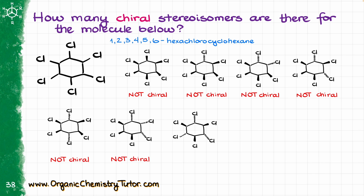In my next molecule I'm going to have my chlorines alternate where they are looking at me or looking in the opposite direction. And now we have again a whole bunch of planes of symmetry over here, so that molecule is definitely not chiral either.